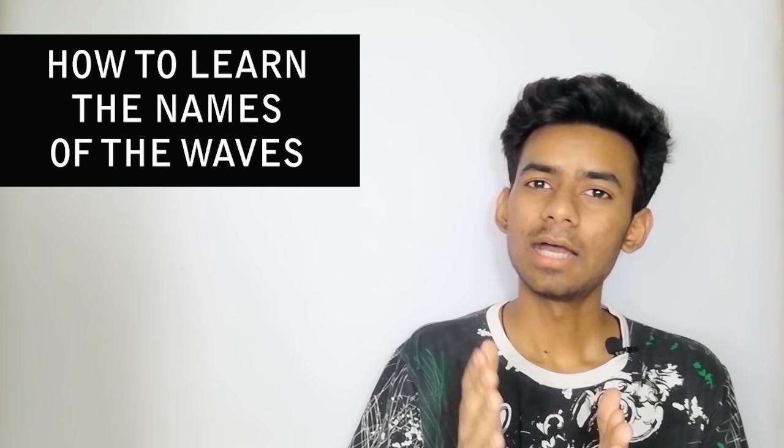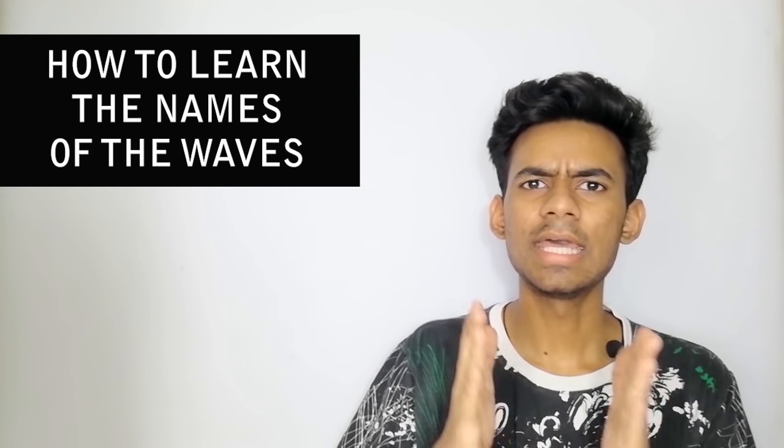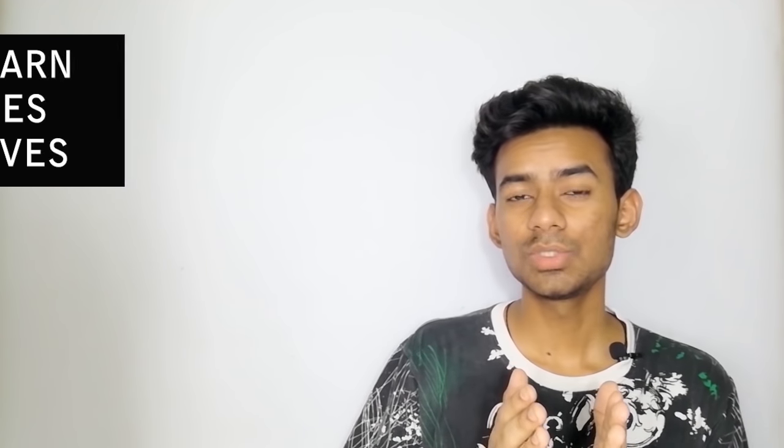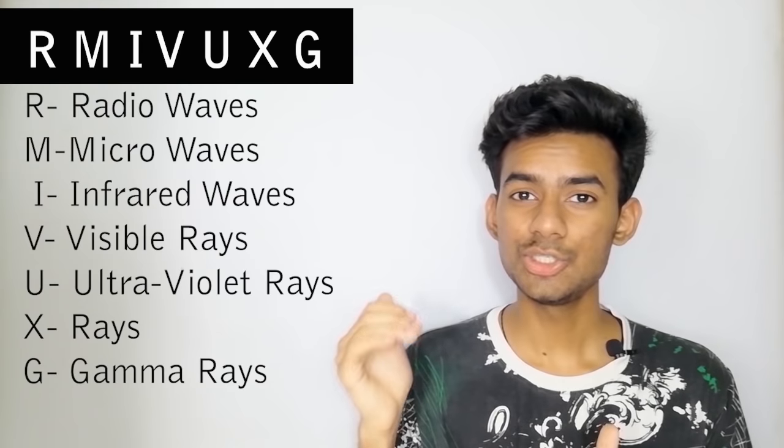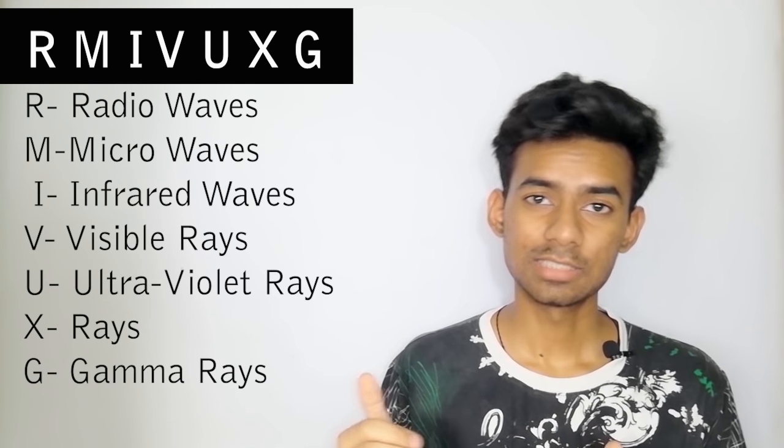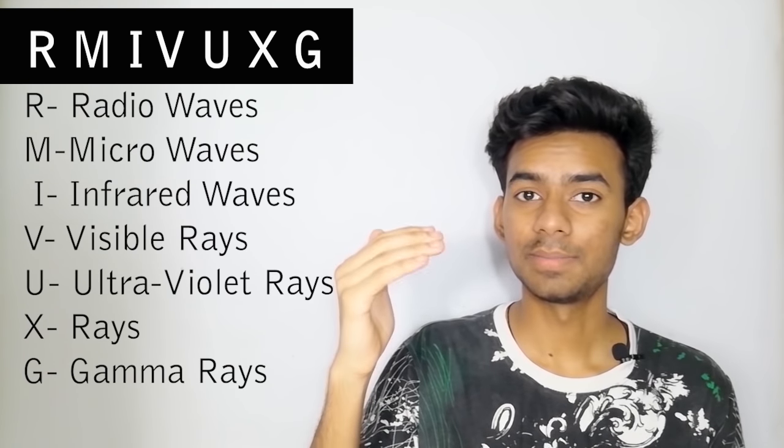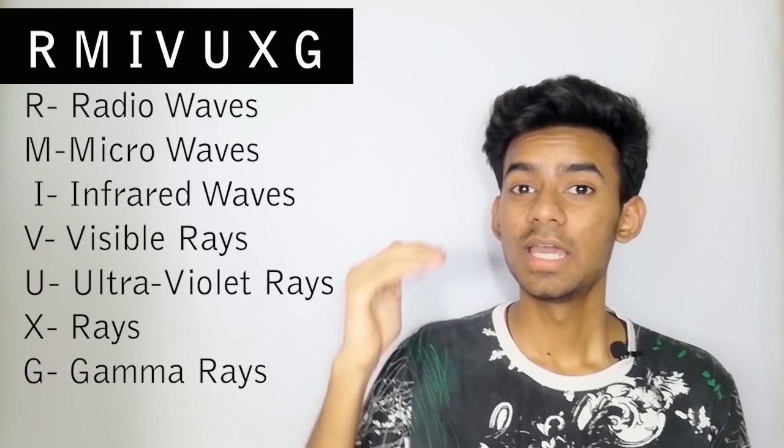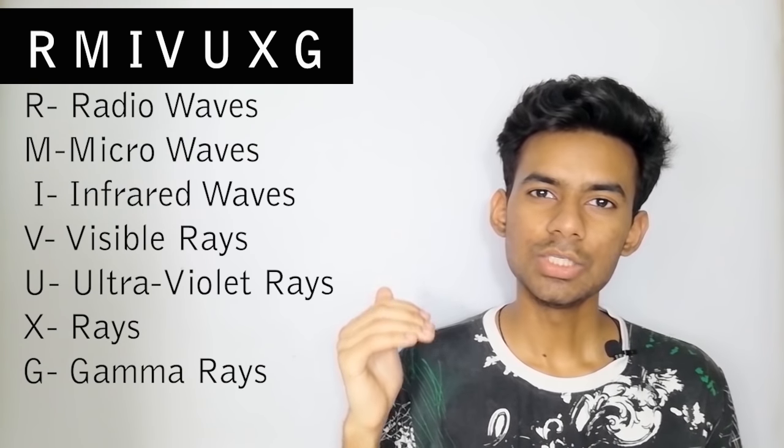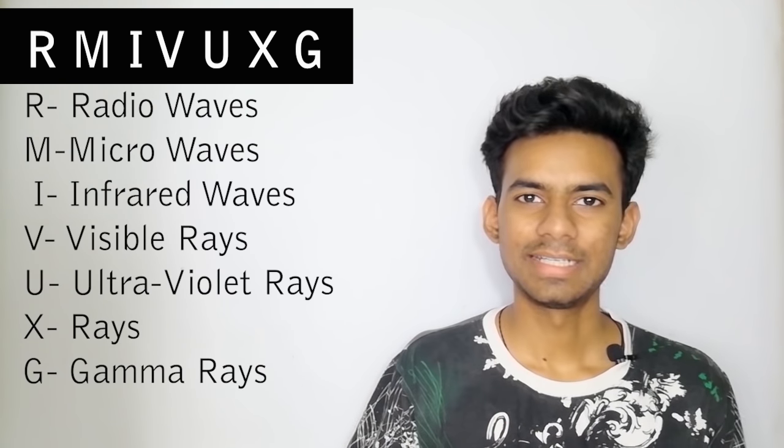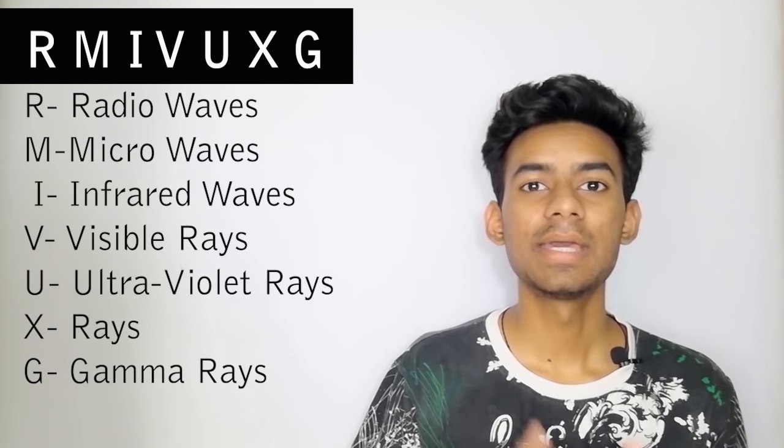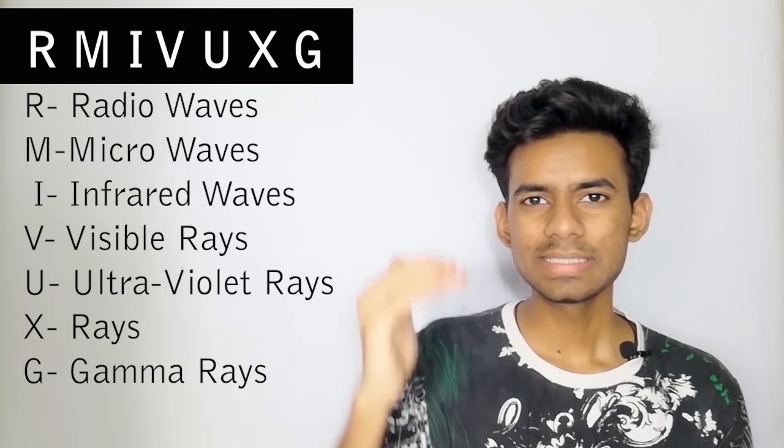The name of the waves is RAMIVUXG. When we use this acronym, we will say R-M-I-V-U-X-G. This means R means radio wave, M means microwave, I means infrared wave, V means visible light, U means ultraviolet rays, X means x-rays, G means gamma rays. So this is a new direction.